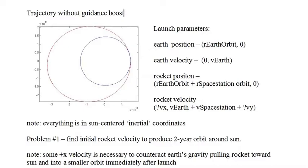We determine the rocket launch velocity by trial and error. If the Earth were not in the simulation, we would launch the rocket with a Y velocity only and increase it until a two-year orbit is achieved. However, immediately after the rocket is launched, Earth's gravity pulls it toward Earth and this disrupts the rocket's trajectory.